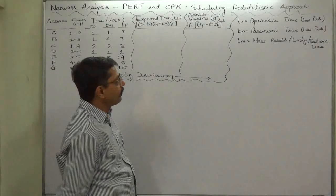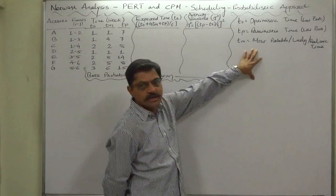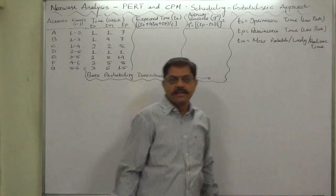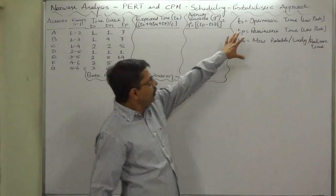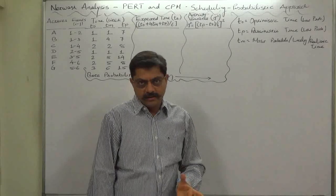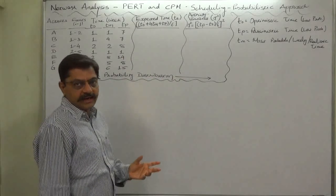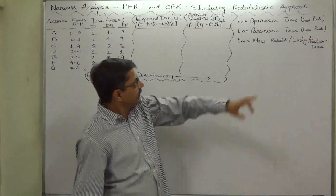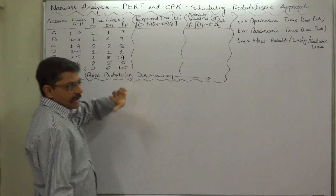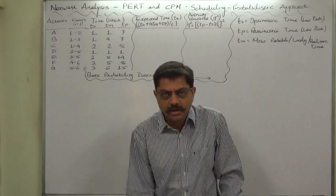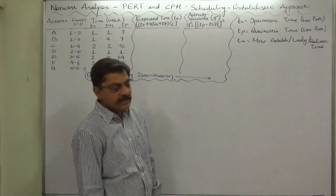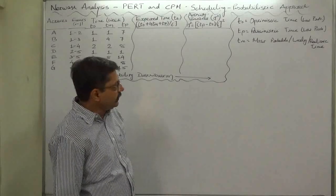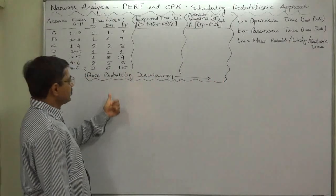According to the beta probability distribution, the estimate of time is made in such a way that three different types of time consumptions are considered for each activity. The first is TO, that is optimistic time — its probability is very low. If all circumstances are in favor, the time in which an activity can be completed is called optimistic time. The exactly opposite is TP, pessimistic time — if everything goes unfavorable, that is the duration in which the activity can be completed. The optimistic time also has very low probability according to the beta probability distribution.